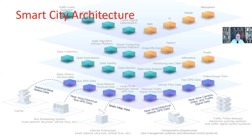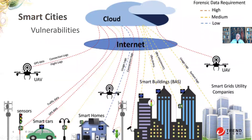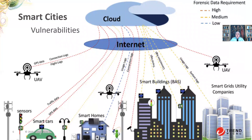So what kinds of vulnerabilities do we see in the smart city? The most important ones are those that involve the interfaces across components. Within each domain, manufacturers have the ability to improve the integrity and security of their platform. It's when you cross boundaries — going from one technology to another, from one vendor to another — that you're most likely to encounter information security problems.